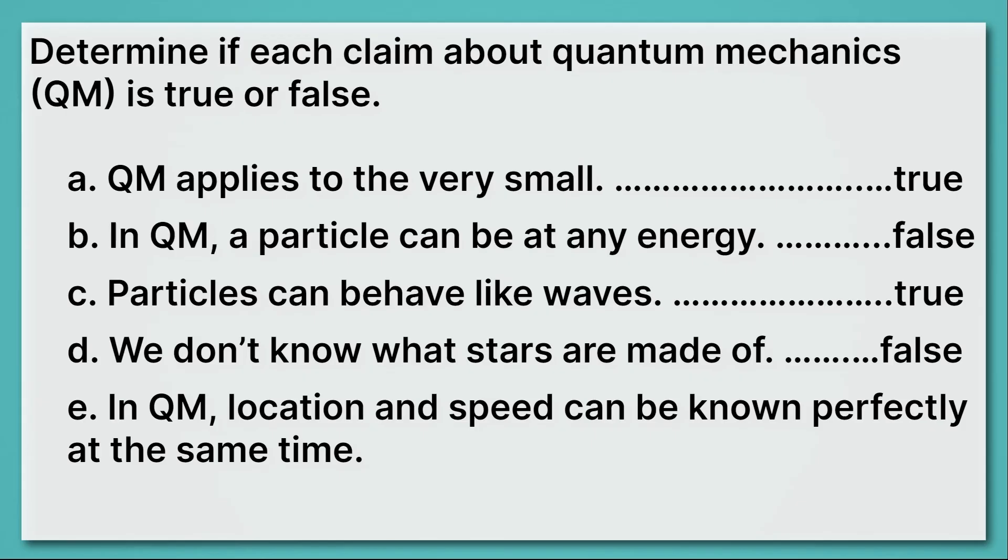E, in quantum mechanics, location and speed can be perfectly known at the same time. That's false. According to the uncertainty principle, we get to choose one to know pretty well, and the other one's going to become less and less certain.